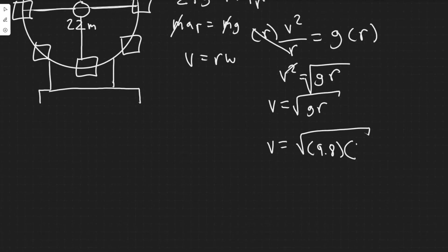So plugging that in, we know our velocity is going to be equal to the square root of 9.8 times 11. That's going to give you v equals 10.38. And then obviously it's meters per second, we're using velocity.